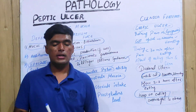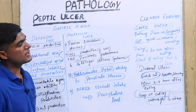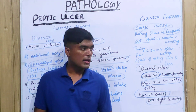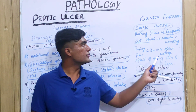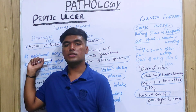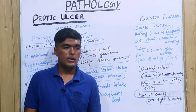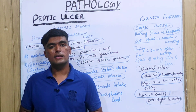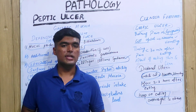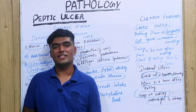We have discussed pathogenesis, peptic ulcer, its causes and risk factors, the clinical features of gastric and duodenal ulcers, and the aggressive and defensive forces. Hope you all understand this ulcer. Stay tuned for upcoming videos on pathology and clinical biochemistry, and don't forget to subscribe to Medical Lectures by Shijat.